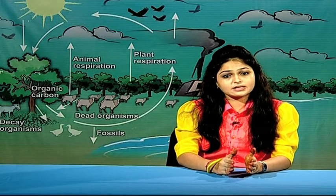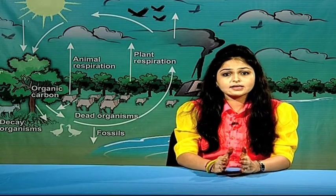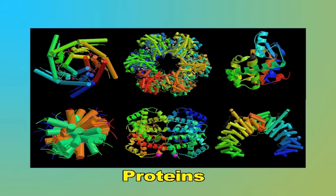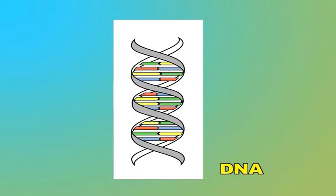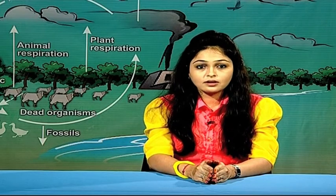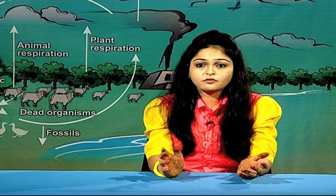Now we will be studying various cycles in detail. The first cycle taken into consideration is the nitrogen cycle. Nitrogen is one of the very important elements on earth as it is a component of amino acids, proteins, vitamins, DNA, RNA, etc. Earth's atmosphere contains around 78% nitrogen. However, plants and animals cannot use it directly in its elemental form from the atmosphere.